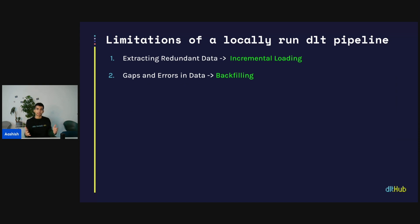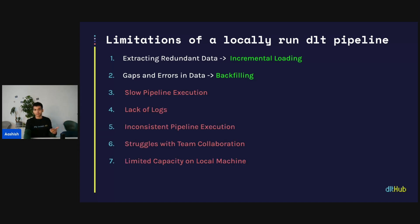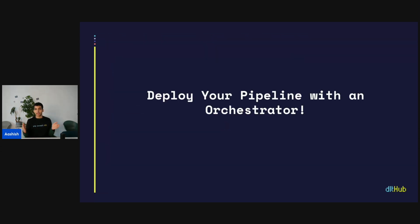Looking at everything collectively: out of those seven problems, two are actually addressable through DLT alone. For example, if you have an issue with extracting redundant data, you can address this by implementing incremental loading. And if your historical data has gaps or errors, you can implement backfilling to rerun data collection for a specific time period. However, looking at the remaining five problems, there isn't a surefire way to address all of them through DLT alone. So the answer is simple: deploy your pipeline with an orchestrator.